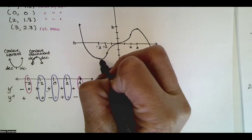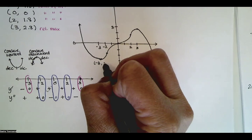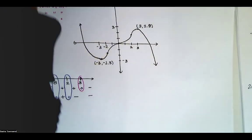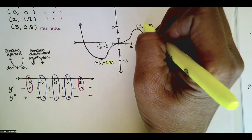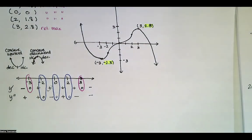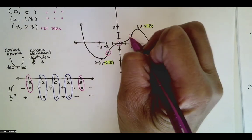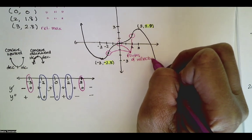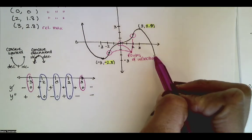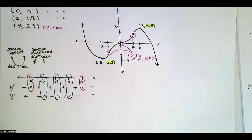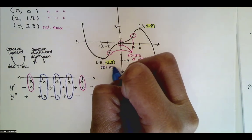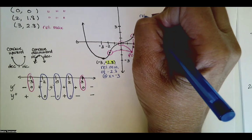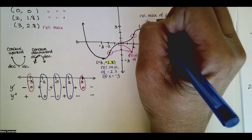That is my function. The point negative three, negative 2.8 corresponds to a relative min, and the point three, positive 2.8 corresponds to a relative max. The relative min is negative 2.8 and the relative max is positive 2.8. These points of inflection are here, here, and here — that's where the graph goes from concave upward to concave downward to concave upward to concave downward.